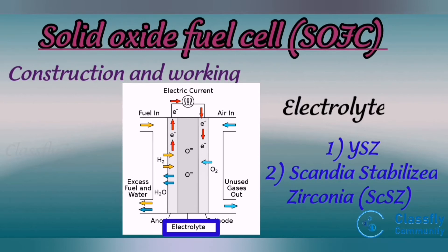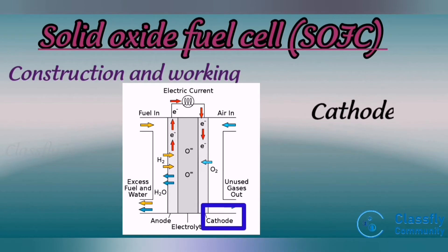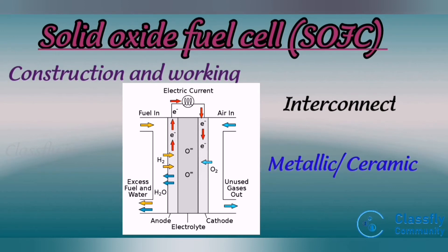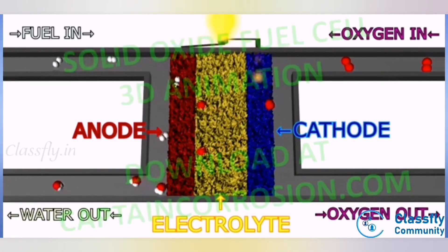The cathode, or air electrode, is a thin porous layer on the electrolyte where oxygen reduction takes place. The overall cathode reaction is: ½O₂ + 2e⁻ → O²⁻. The interconnect can be either a metallic or ceramic layer that sits between each individual cell. Here we can see the working of a solid oxide fuel cell.